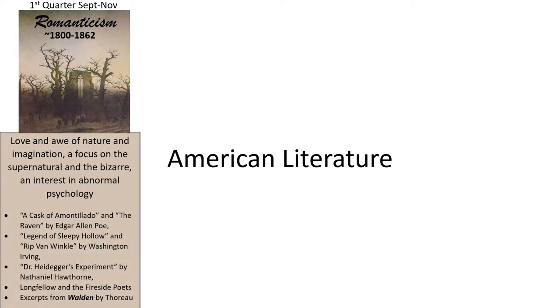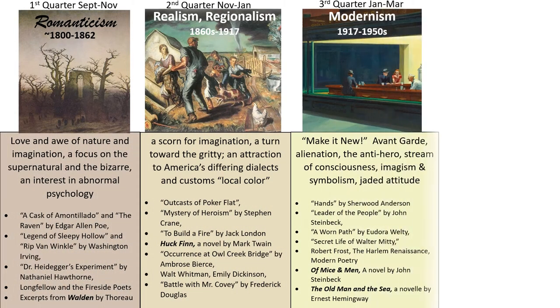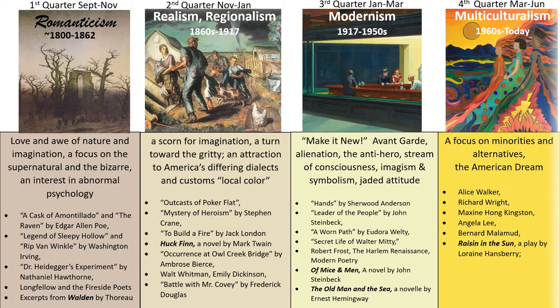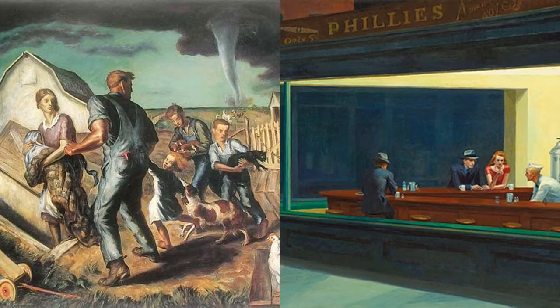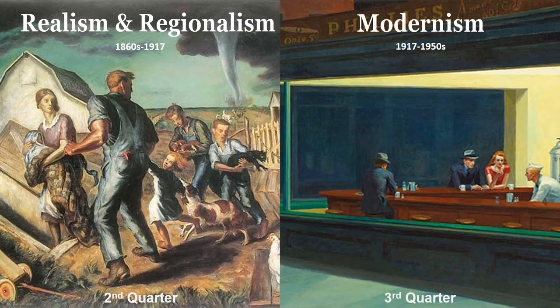A Year of American Literature. In this, the third quarter of American Literature, we are going to contrast and compare realism and regionalism, which we studied second quarter, with modernism, from about the time of the First World War until about the time of the 1950s.